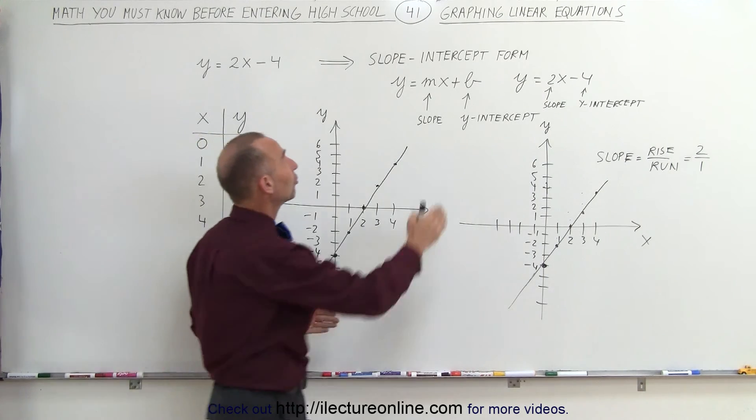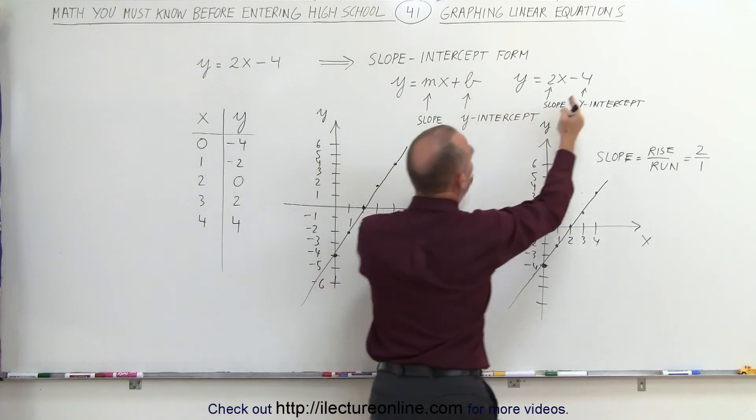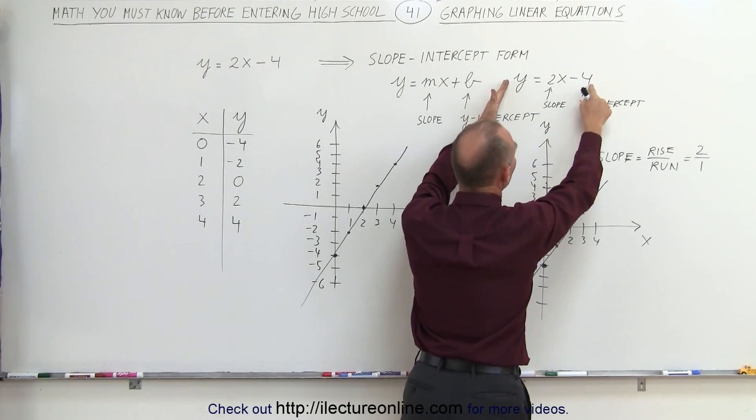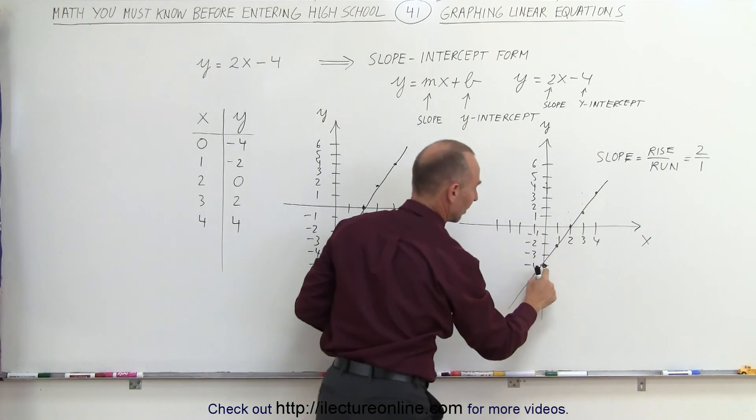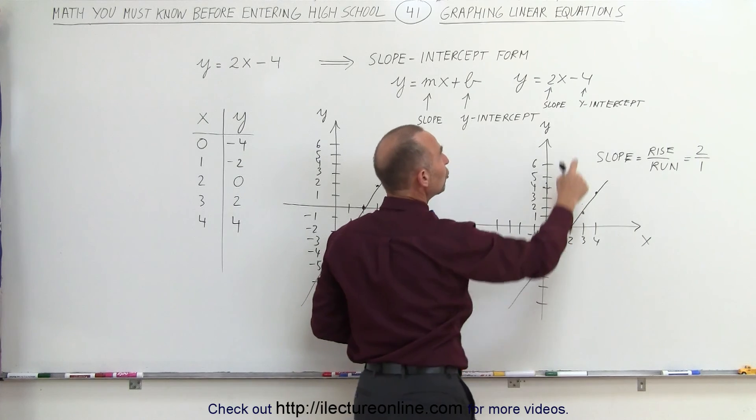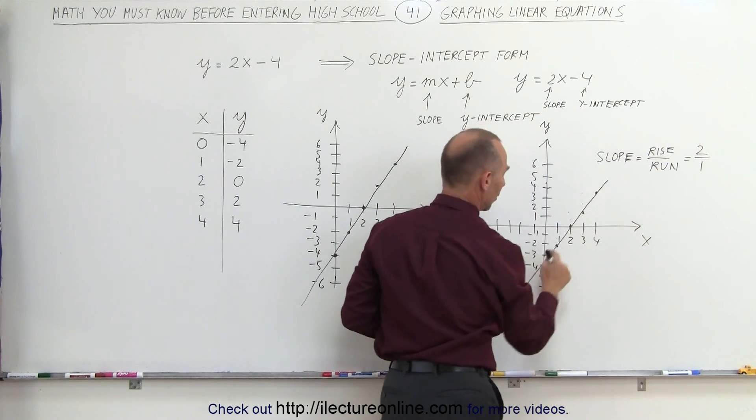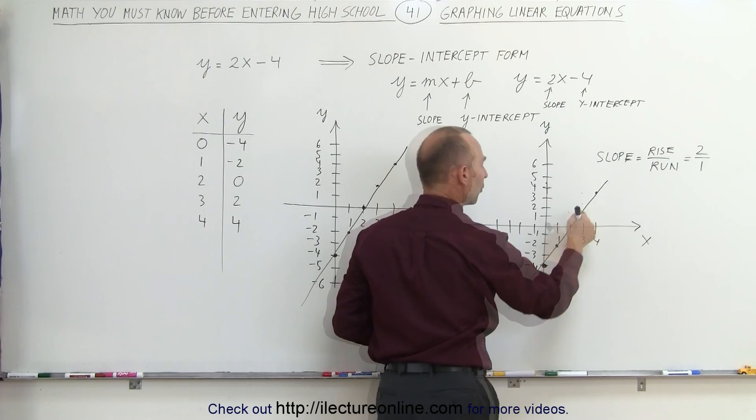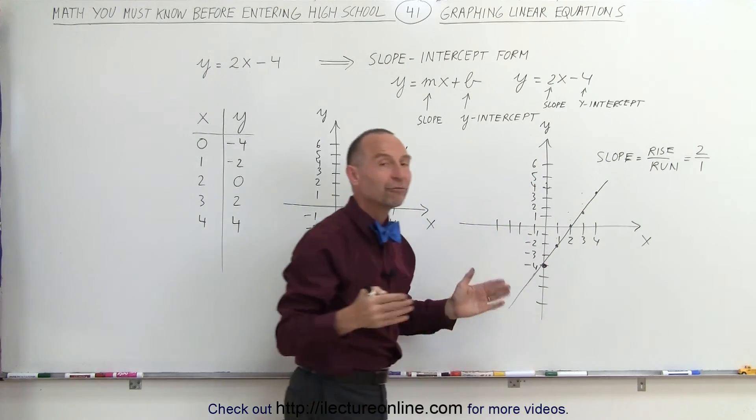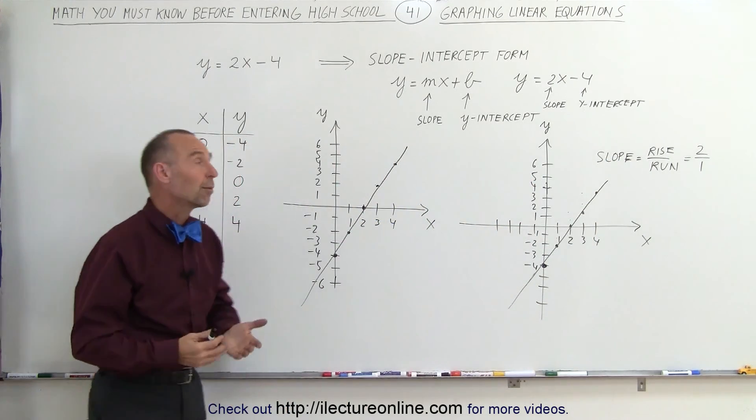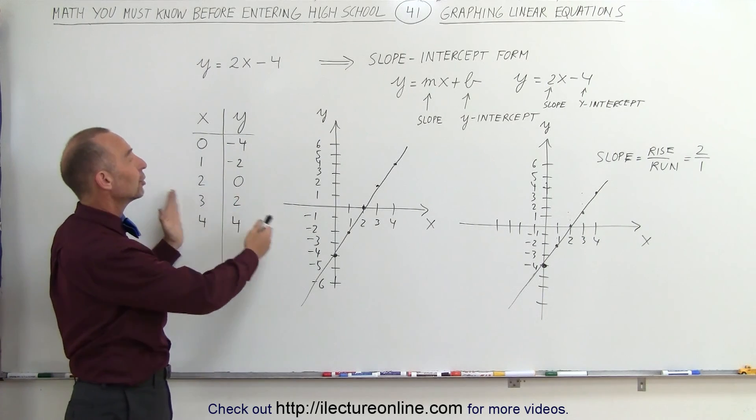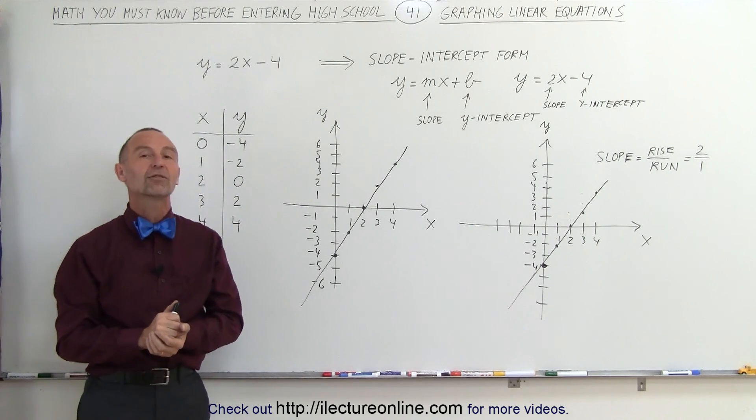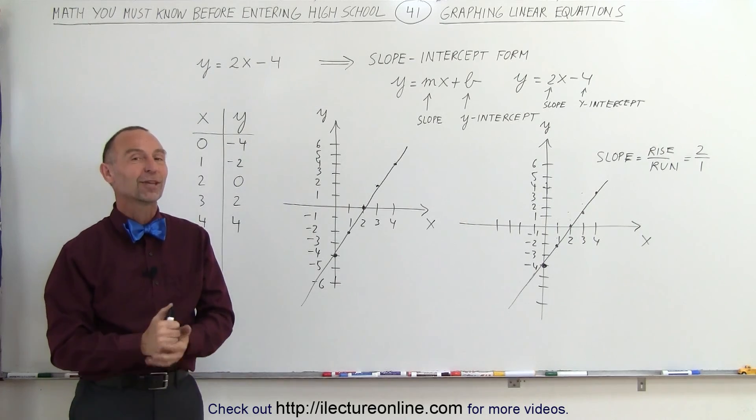Here's the equation, slope-y-intercept. Find the y-intercept, the place where it crosses the y-axis. Here it's at negative 4. Then use the slope, the definition rise over run. Go up two units, over one, over one. Connect those dots and you have the very same line. That's what we mean by graphing linear equations, either using a table of values or using the slope-intercept form. And that's how it's done.